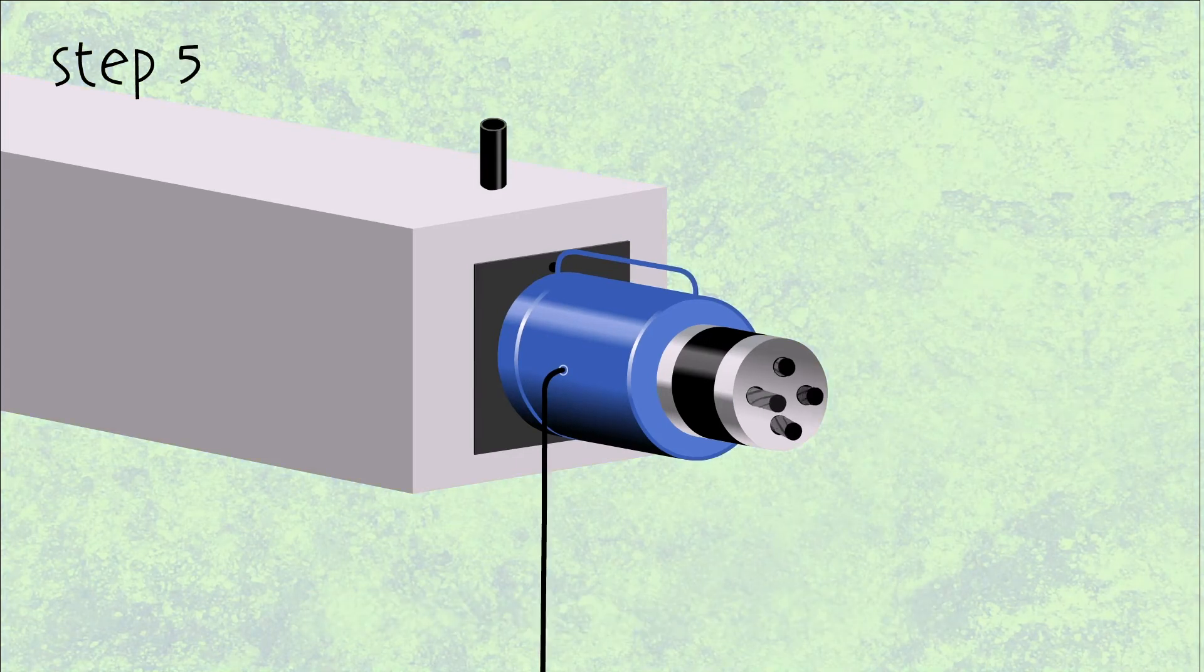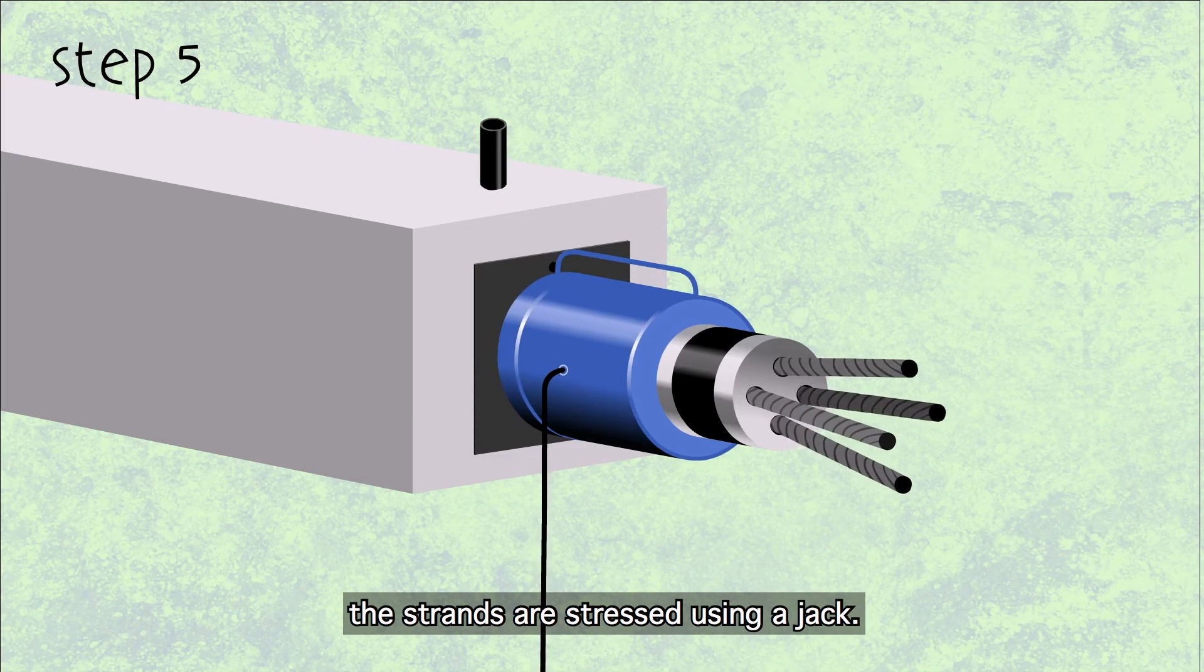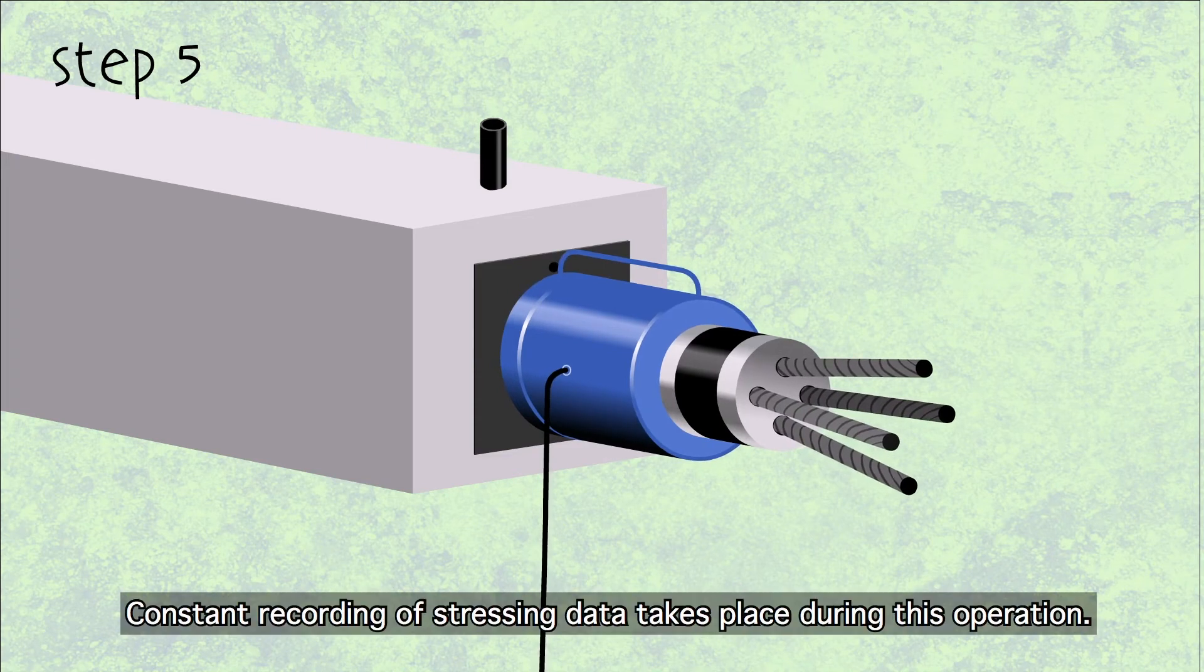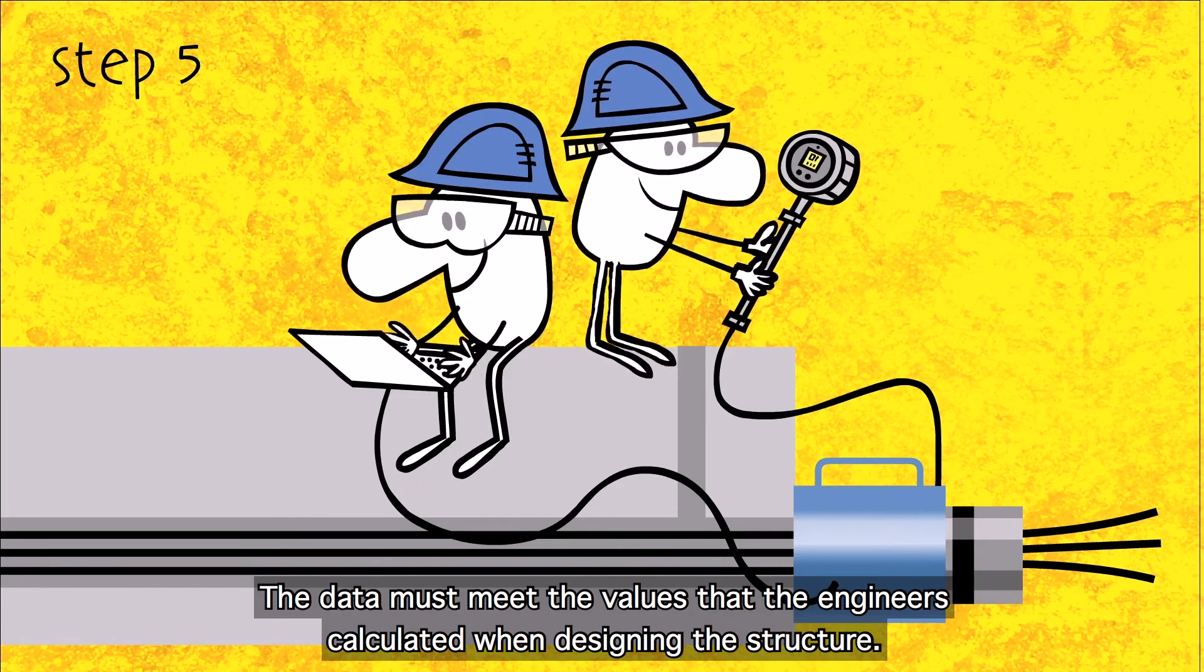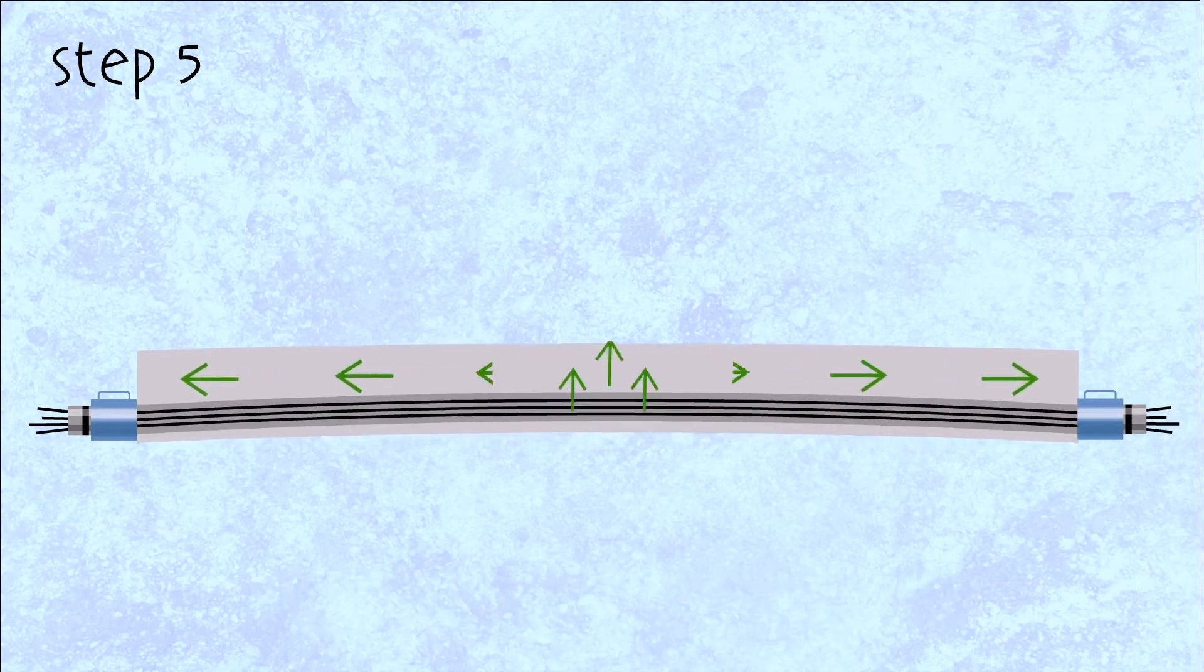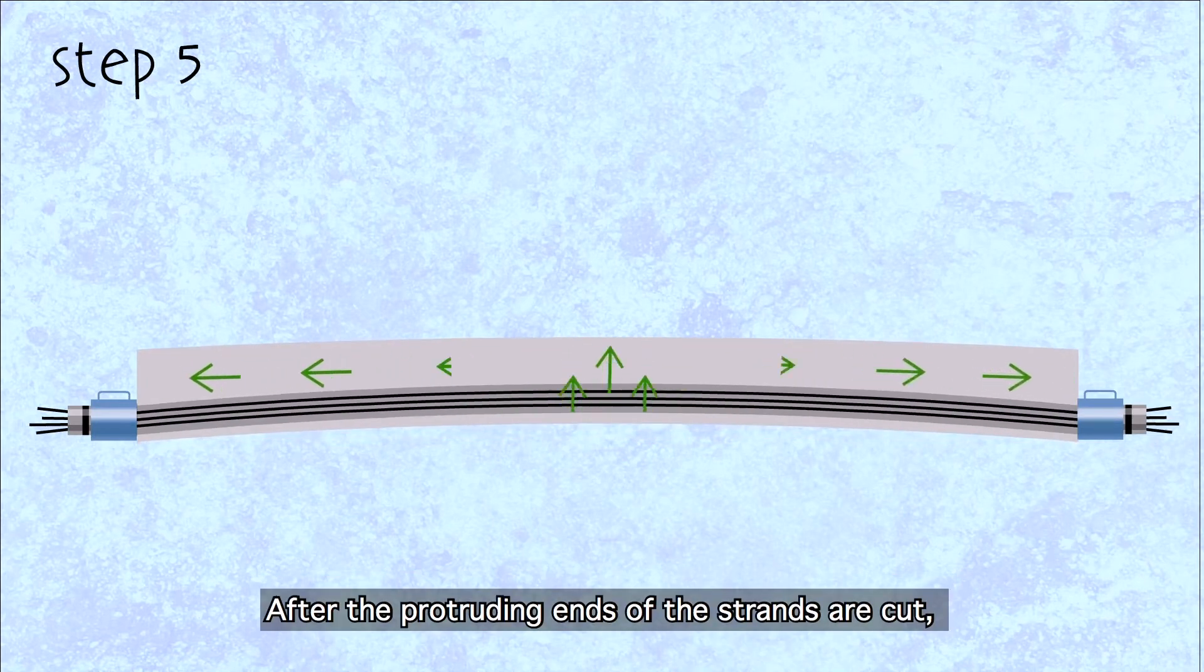In step 5, the strands are stressed using a jack. Constant recording of stressing data takes place during this operation. The data must meet the values that the engineers calculated when designing the structure.